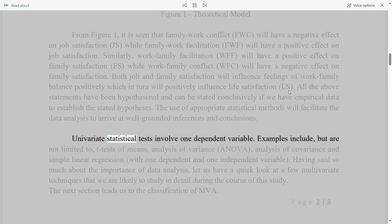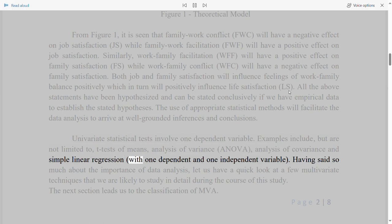Univariate statistical tests involve one dependent variable. Examples include, but are not limited to, T-tests of means, analysis of variance, ANOVA, analysis of covariance, and simple linear regression, with one dependent and one independent variable. Having said so much about the importance of data analysis, let us have a quick look at a few multivariate techniques that we are likely to study in detail during the course of this study. The next section leads us to the classification of MVA.